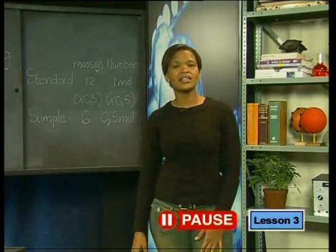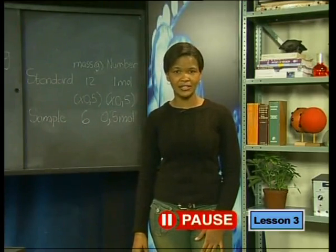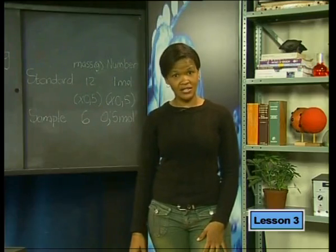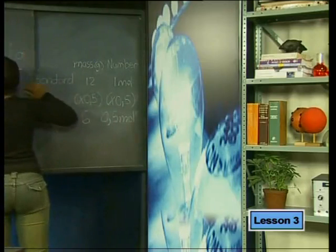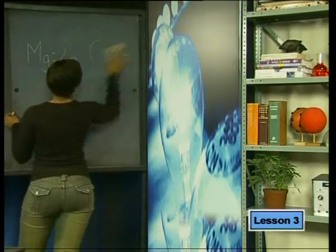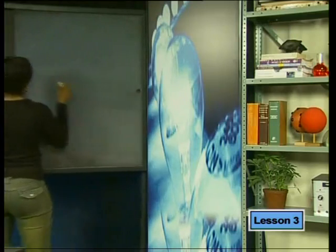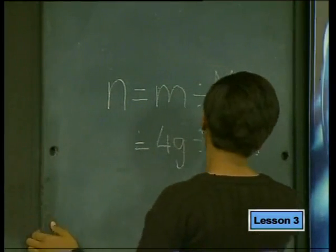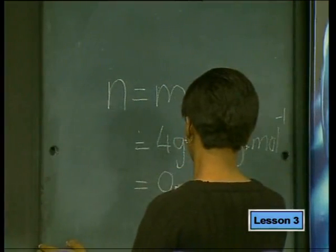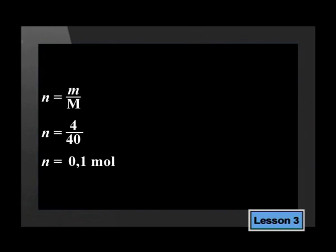Now, can you use the molar mass to calculate the number of moles in this 4-gram sample of sodium hydroxide? Remember that the number of moles equals the mass of the sample divided by the mass of 1 mole. The number of moles equals 4 grams divided by the molar mass of sodium hydroxide, 40 g/mol. So the number of moles is 0.1 mole.